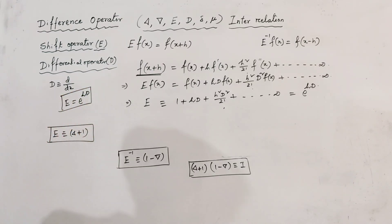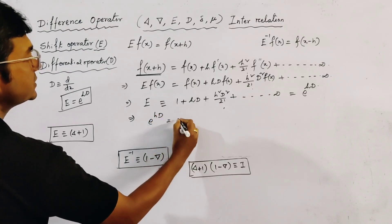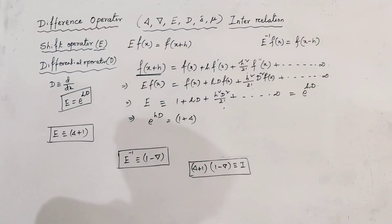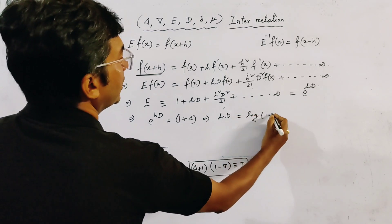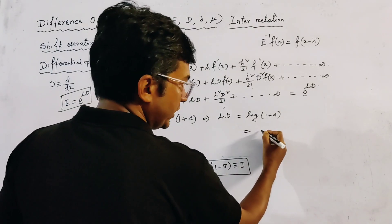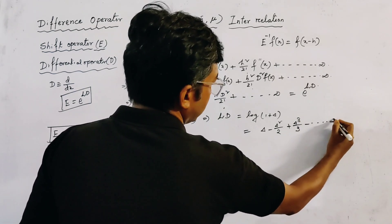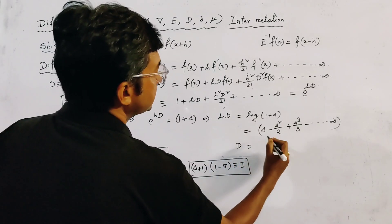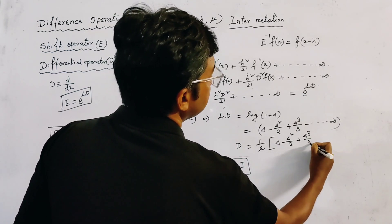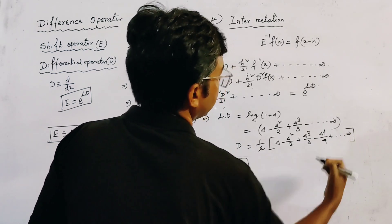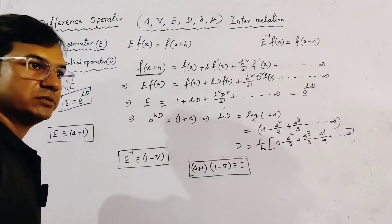Putting the value of E from this relation, we get e^(hD) = 1 + delta. Taking logarithm on both sides, we get hD = log(1 + delta). Expanding this, we get hD = delta - delta²/2 + delta³/3 - ... and so on to infinity. This is the relation between the differential operator and the forward difference operator.